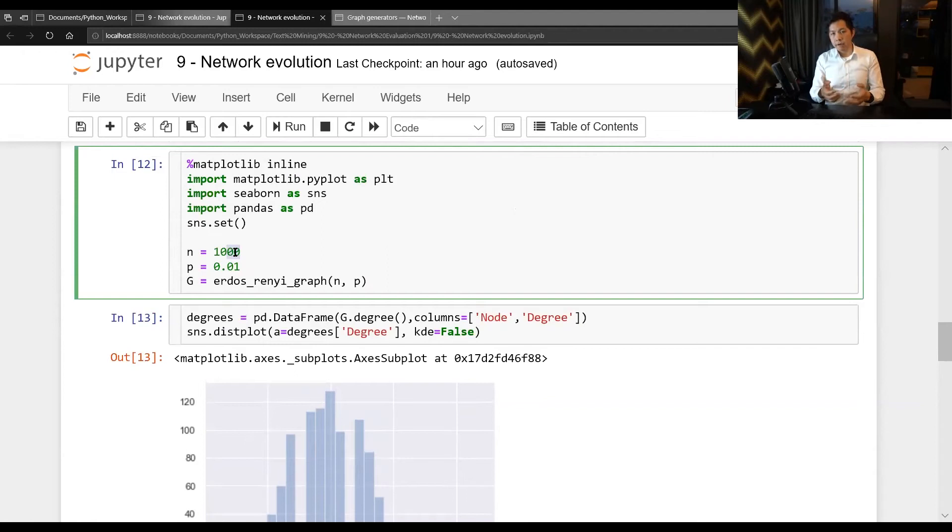That is, you have a number of trials. And in each trial, you can be success or fail. Just like toy crossing. And then you want to count a number of head turning up. So that's the same things.